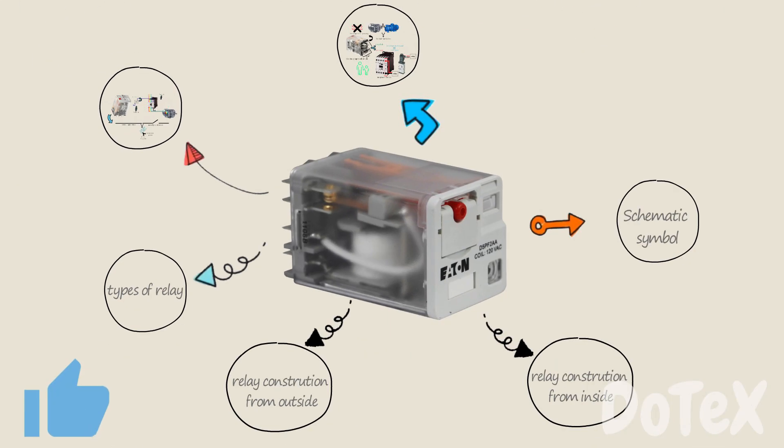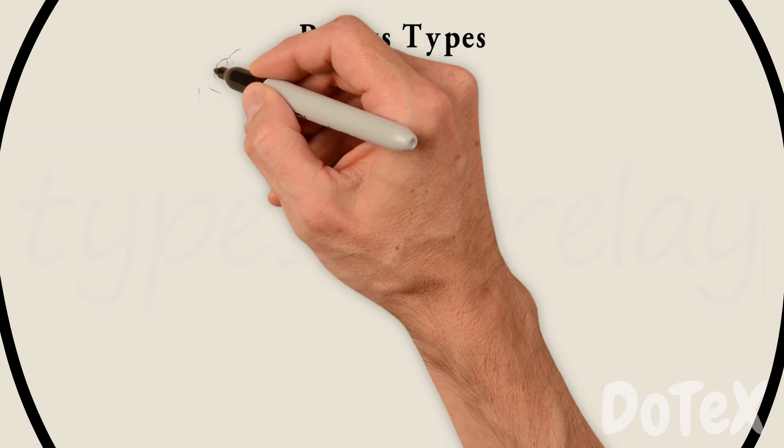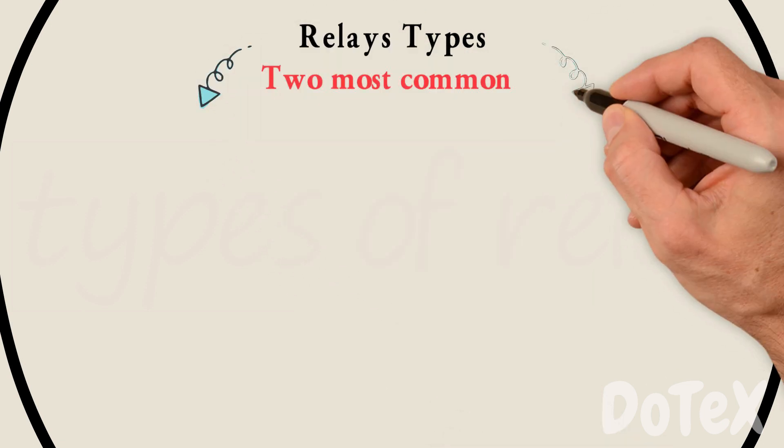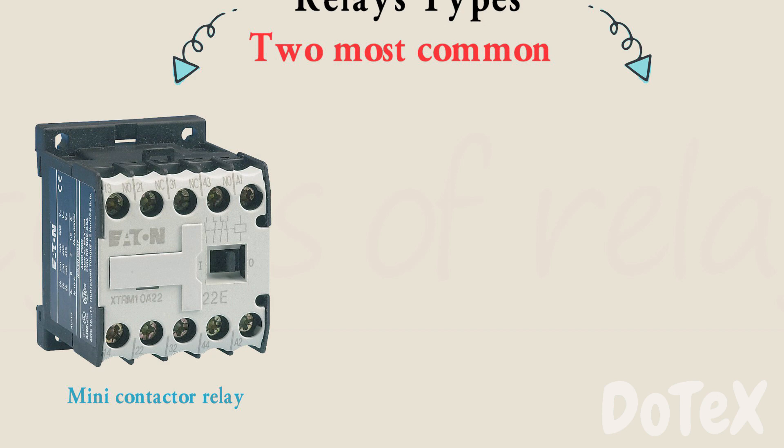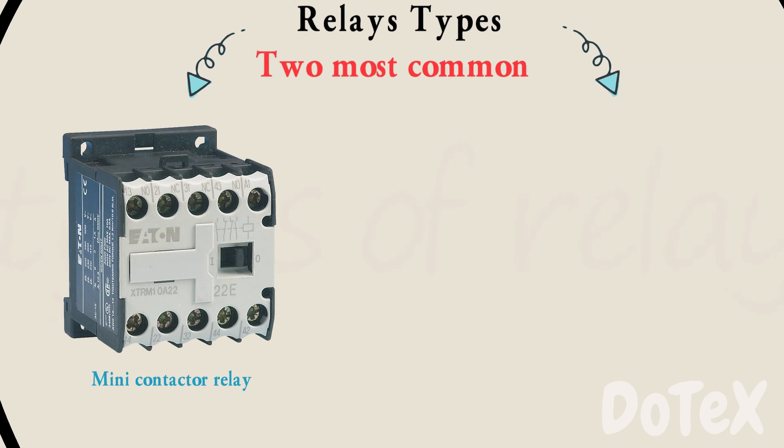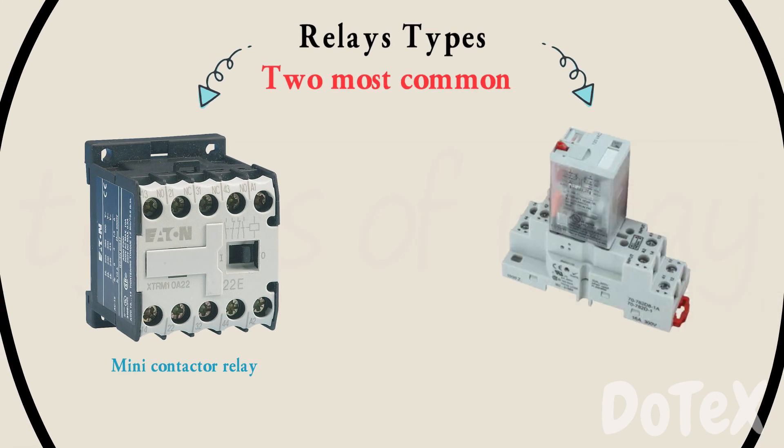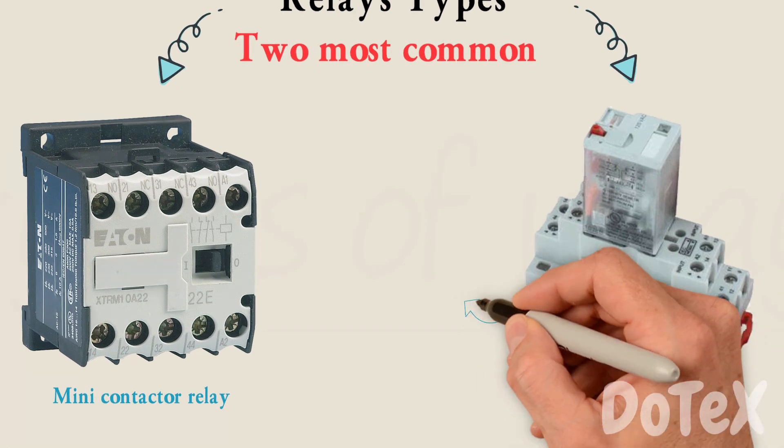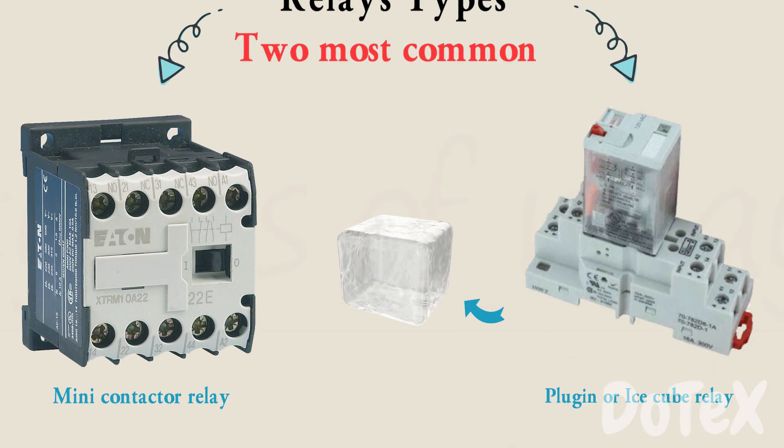Now let's have a look at the types of a relay. Relays come in many types. The two most common are the mini contactor relay since it looks like a contactor, and the plug-in or ice cube relay since it looks like an ice cube.